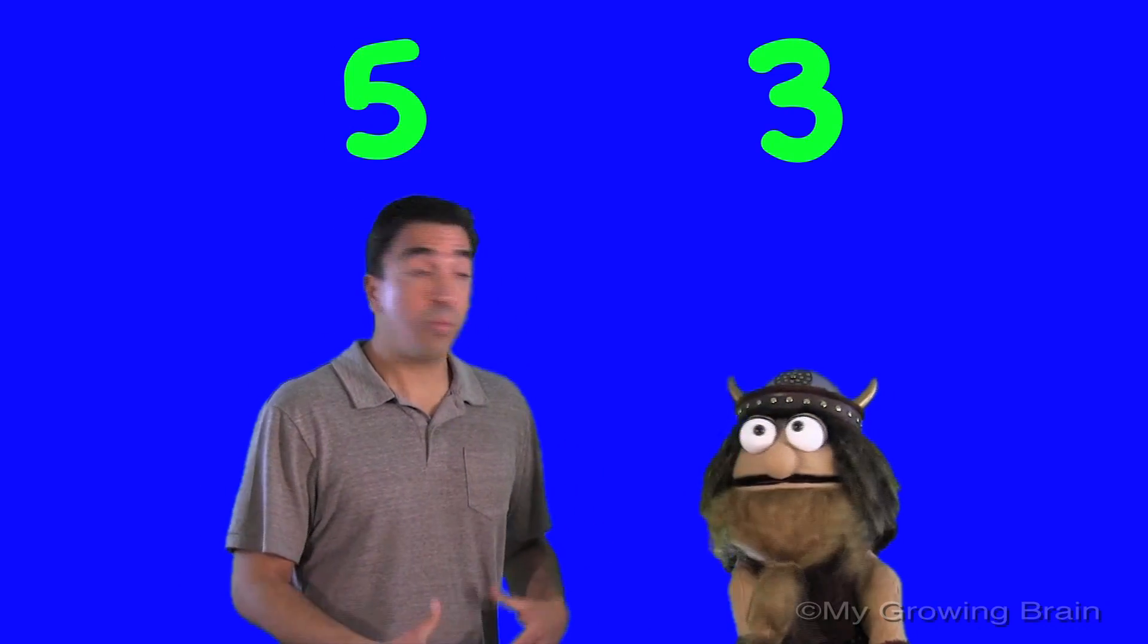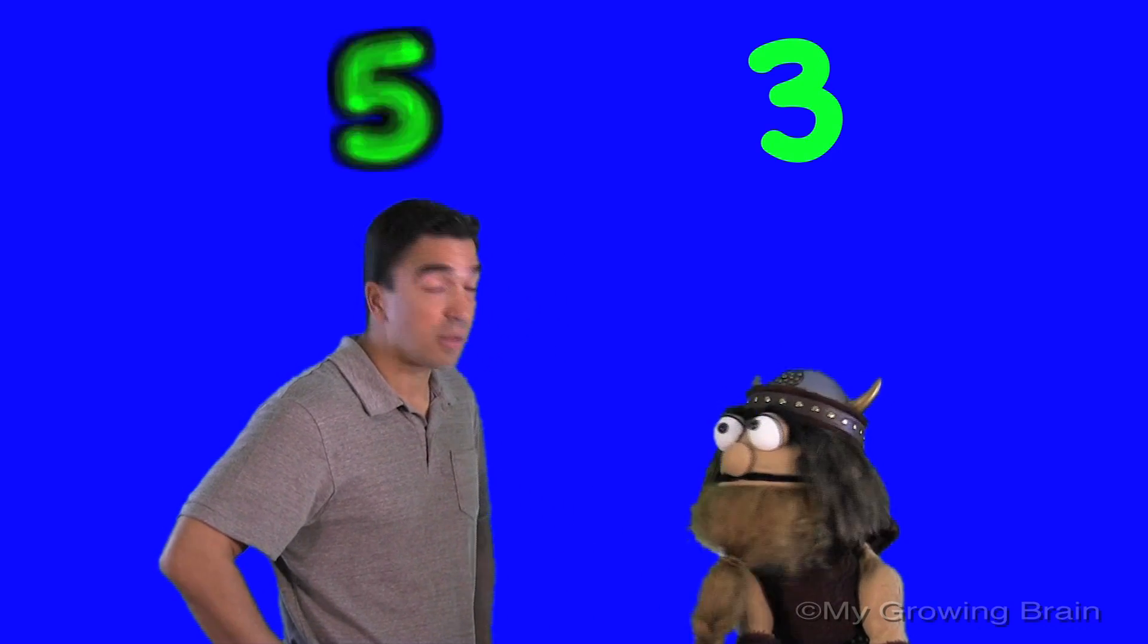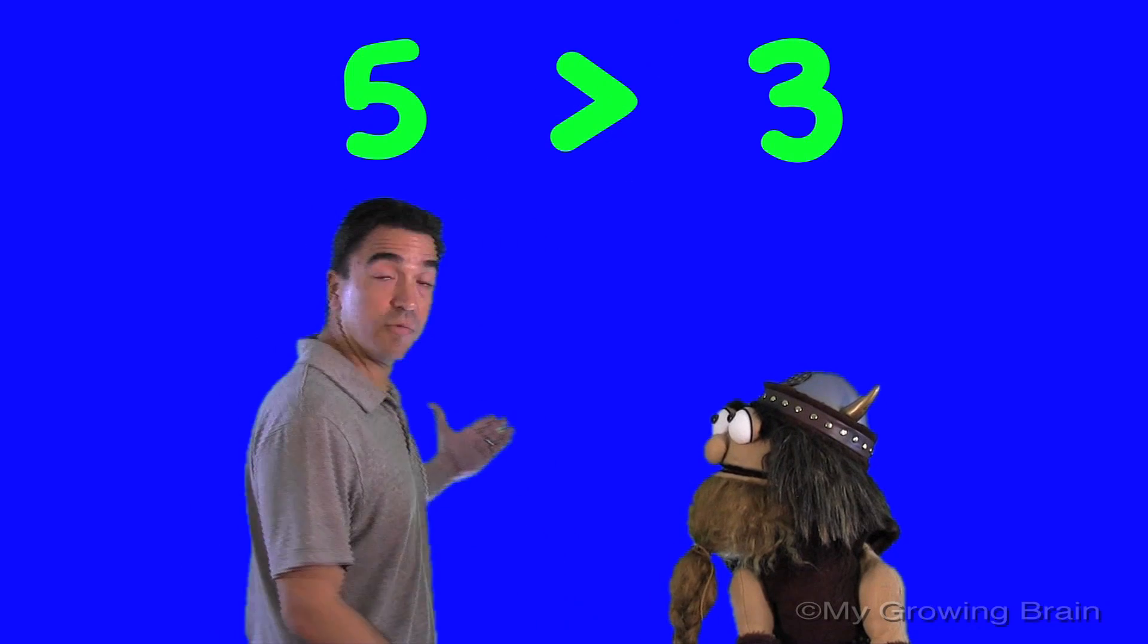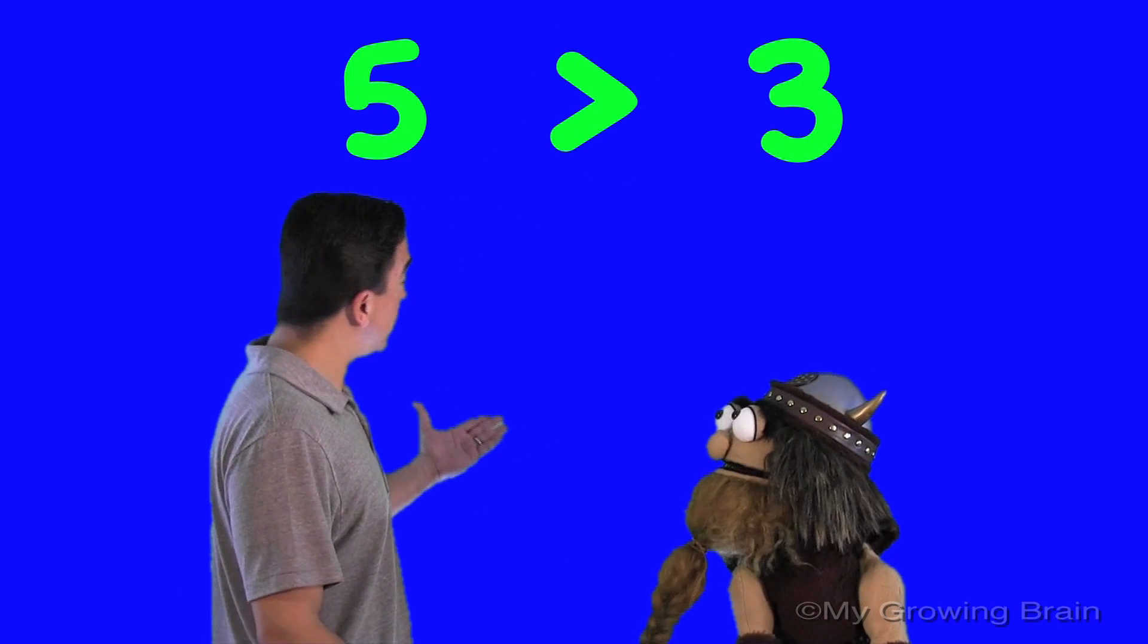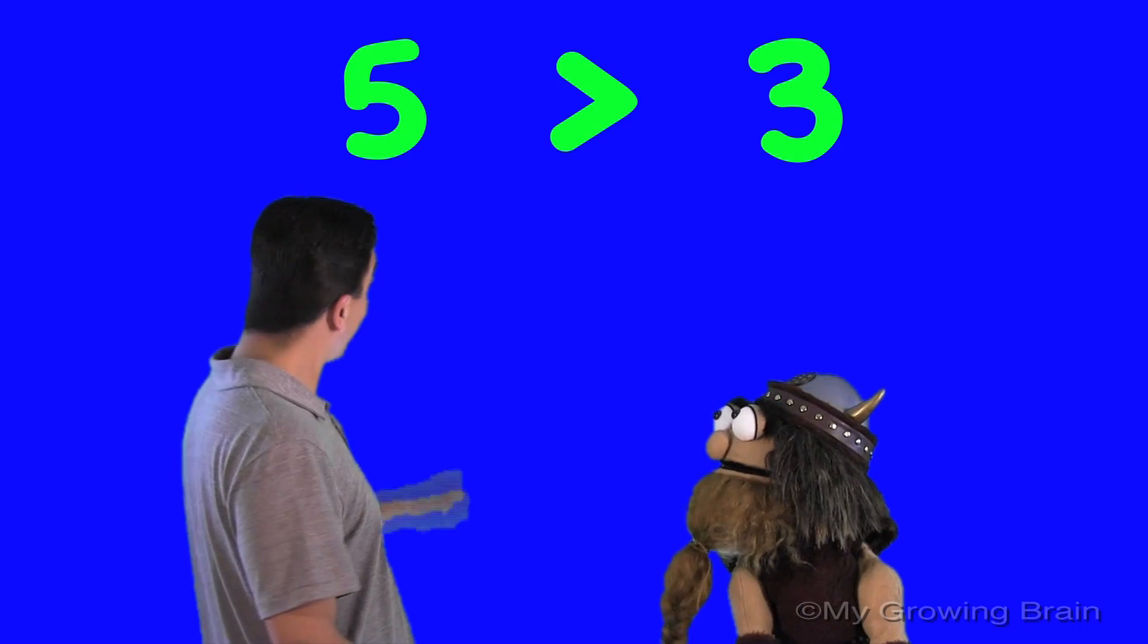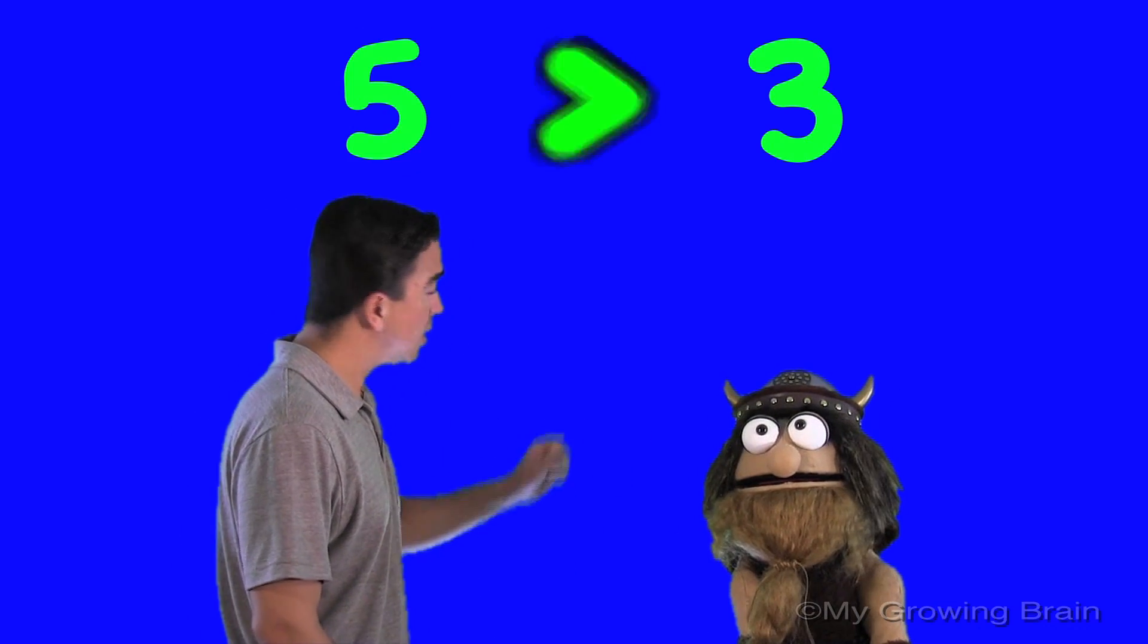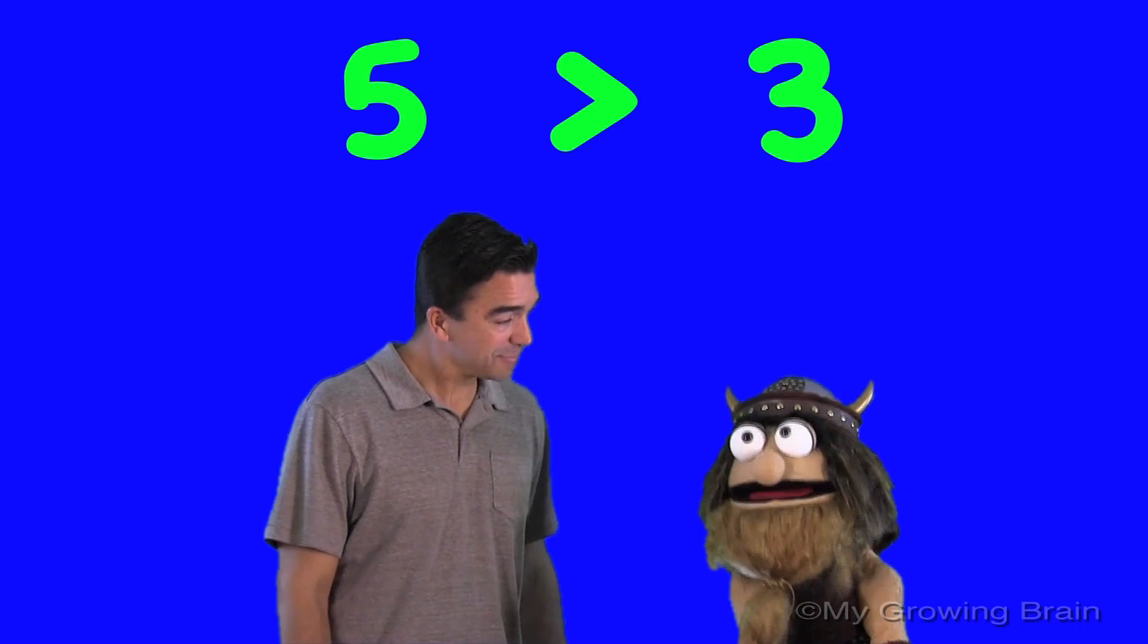So, which number would the alligator want to eat? Well, Coach Mike, the alligator would want to eat the number five. The number five. Okay. So, now we come over here. And we read this from left to right. Five is greater than three. I think I get it, Coach Mike.